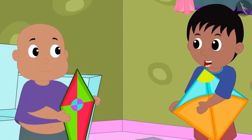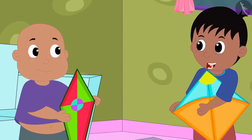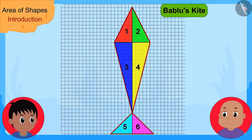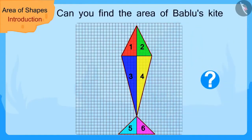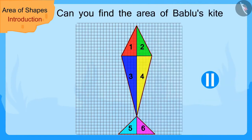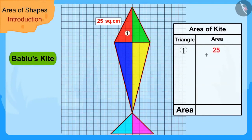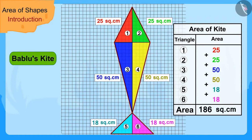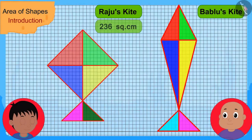Raju said this is a very easy process and used it to find the area of Bablu's kite. Can you find the area of Bablu's kite by the process you just learned? We can find the area of Bablu's kite in this way — Bablu's kite has an area of 186 square centimeters. Raju also found the area of Bablu's kite just like you.